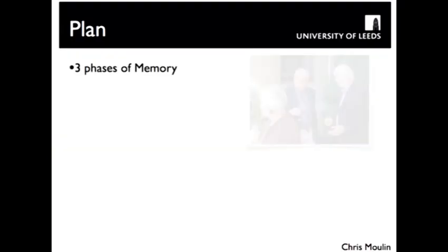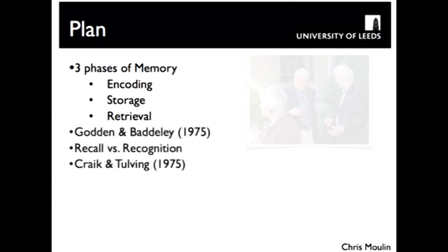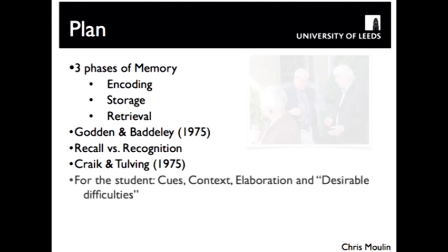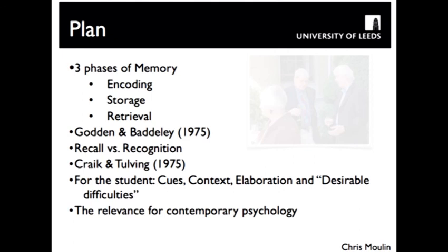The plan of what I'm going to talk about today has basically got three parts to it. I'm going to start off by introducing you to the three phases of memory, which are encoding, storage, and retrieval. I'm going to talk about two classic studies from the 1970s about this topic and the relationship between encoding and retrieval, trying to illustrate this with things of interest to students. I'm also going to wrap up by telling you about contemporary research using memory cues and ways to help people with memory impairment.